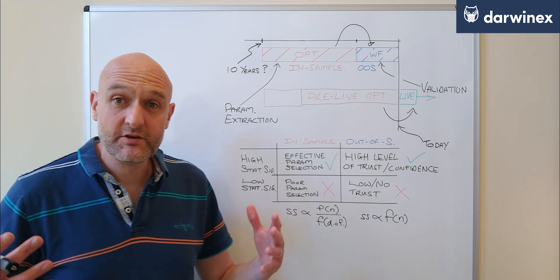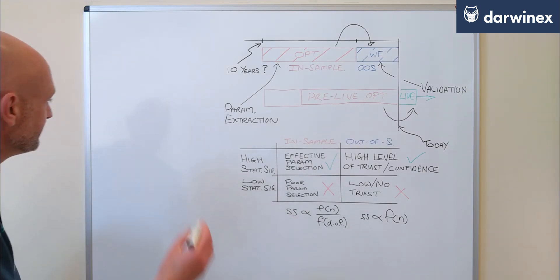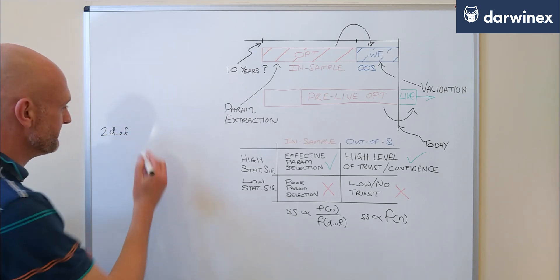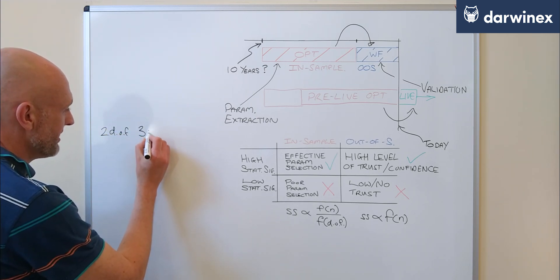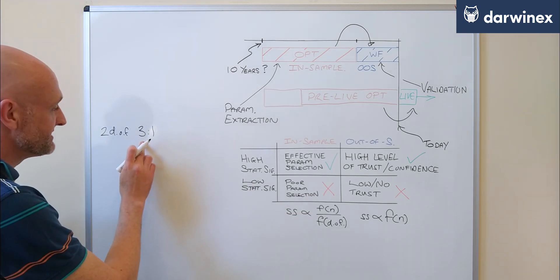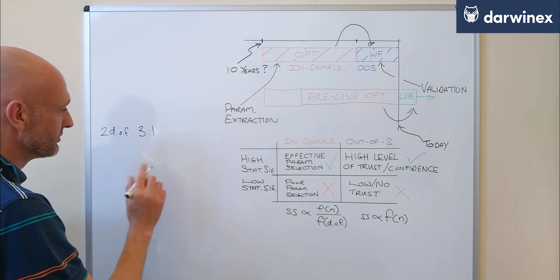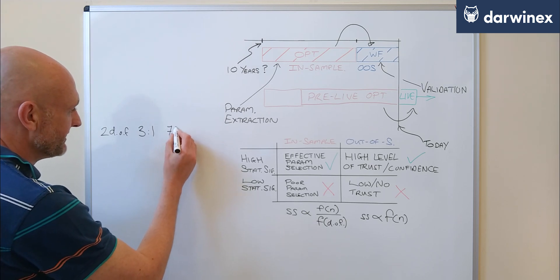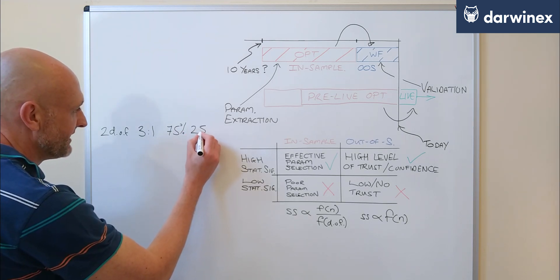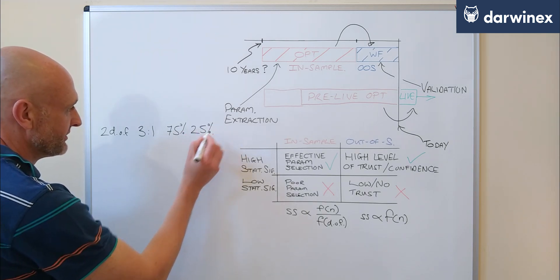So I have a few simple rules that I use in terms of the degrees of freedom. So when we have two degrees of freedom, I tend to use a ratio of three to one. So the in-sample optimization is three times larger than the out-of-sample walk forward. So effectively that's using 75% of the data for your optimization and 25% for the walk forward.